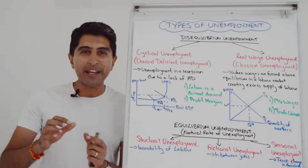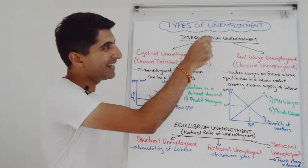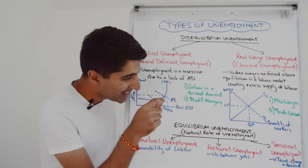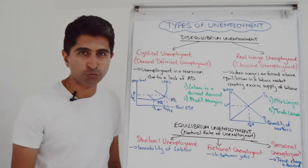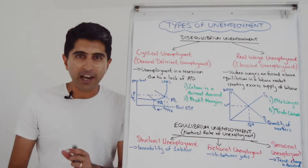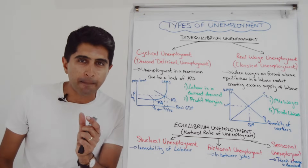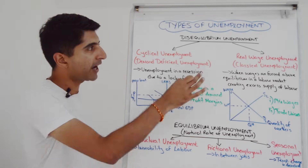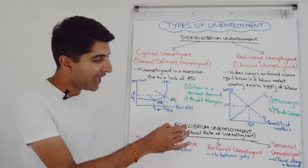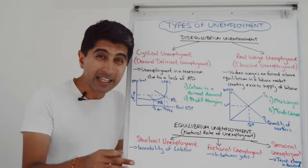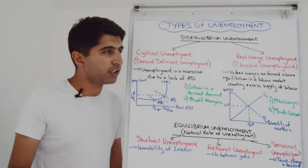Hi everybody. There are two major groups of unemployment: disequilibrium unemployment and equilibrium unemployment, also known as the natural rate of unemployment. These terms refer to the labour market. There are types of unemployment that can occur when the labour market is in disequilibrium, and types that can even occur when the labour market is in equilibrium. Let's get into those types.